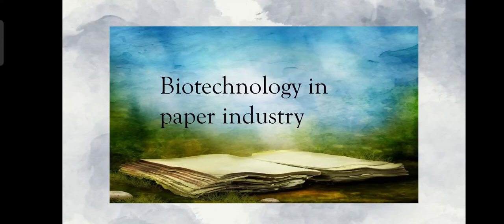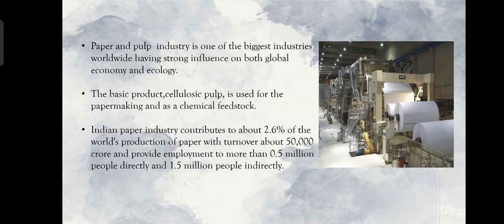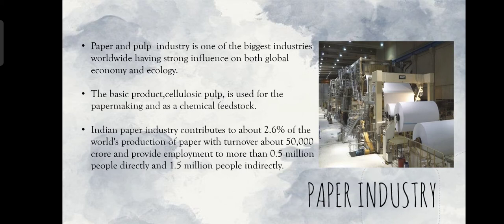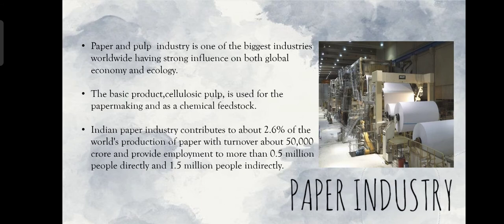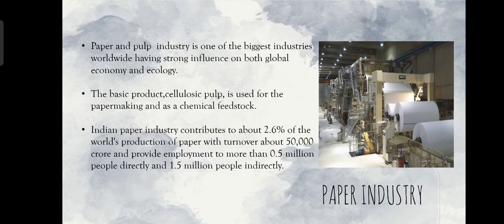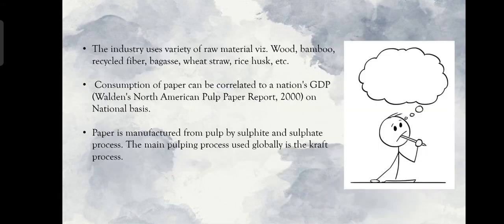Here we are going to discuss about biotechnology in the paper industry. The paper and pulp industry is one of the biggest industries worldwide, having strong influence on both global economy and ecology. The basic product, cellulosic pulp, is used for paper making and as a chemical feedstock. Indian paper industry contributes to about 2.6% of the world's production of paper, with a turnover of about 50,000 crore, and provides employment to more than 0.5 million people directly and 1.5 million people indirectly.